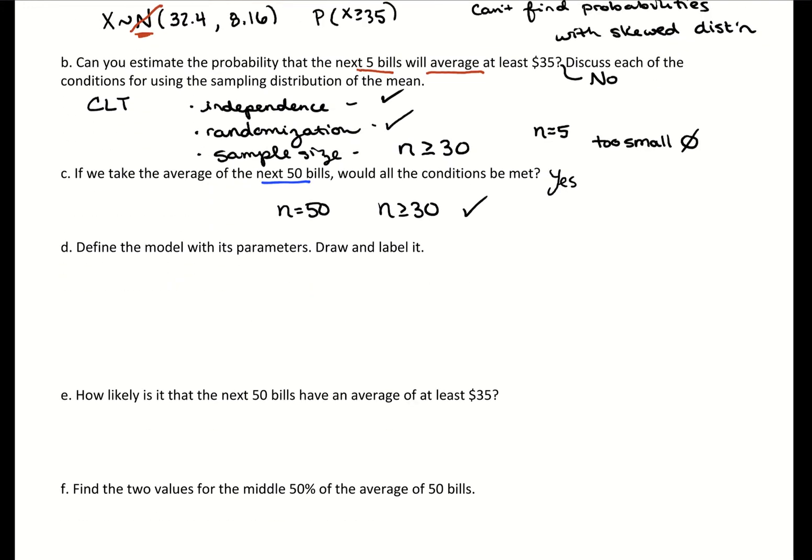Defining our parameters - when it asks for the parameters, it's asking what is the mean and what's the standard deviation for our distribution. For the mean, we just copy down our population mean. That's kind of the punchline to these sampling distributions - the mean you just copy from the population. Standard deviation, you always have to do a calculation. So $8.16 divided by the square root of our sample size, 50, which is 1.154.